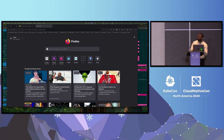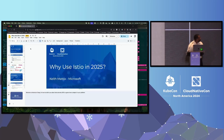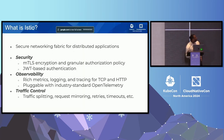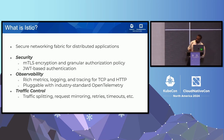We're so excited to have you here and this talk is just for you. At its core, Istio is a secure networking fabric for distributed applications. We also hear this called a service mesh, and what this means is that we're going to provide you security, observability, and traffic control for all your applications without modifying any of your apps.